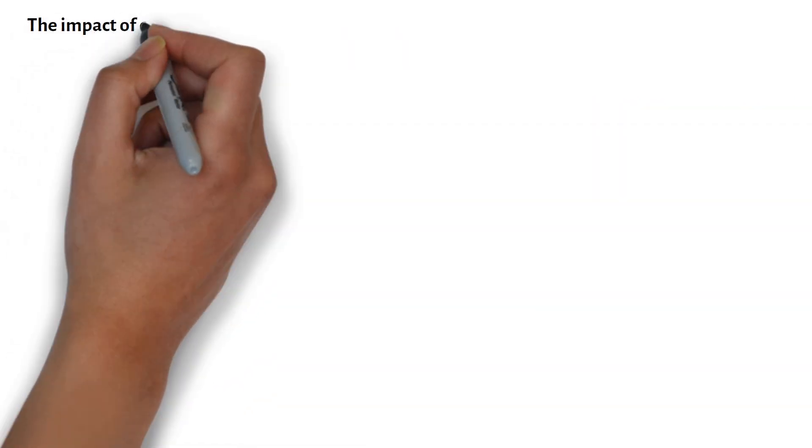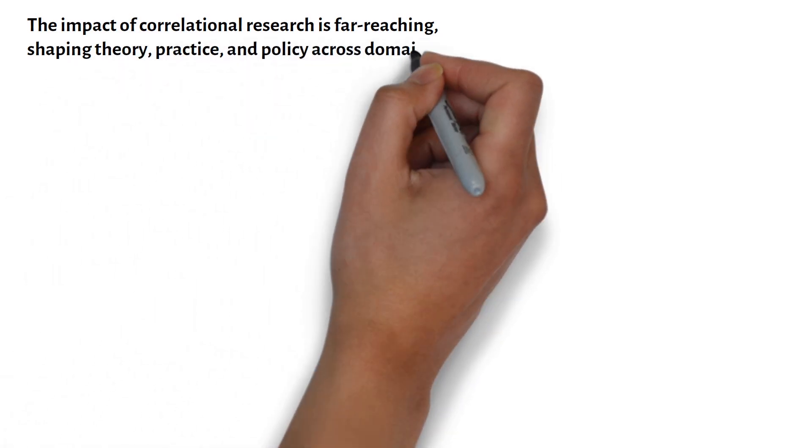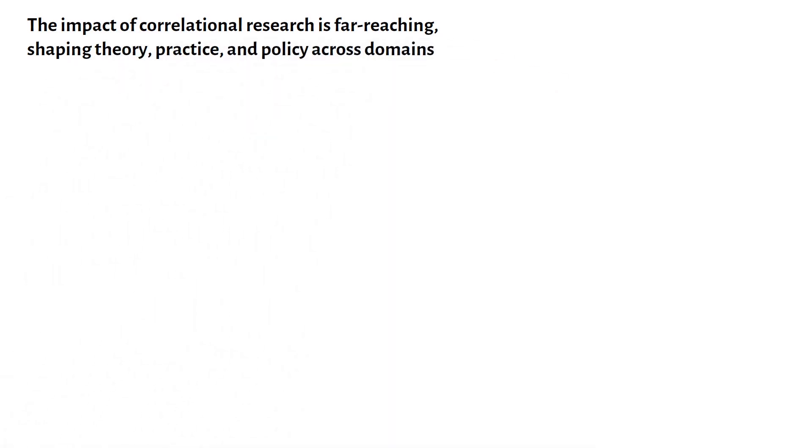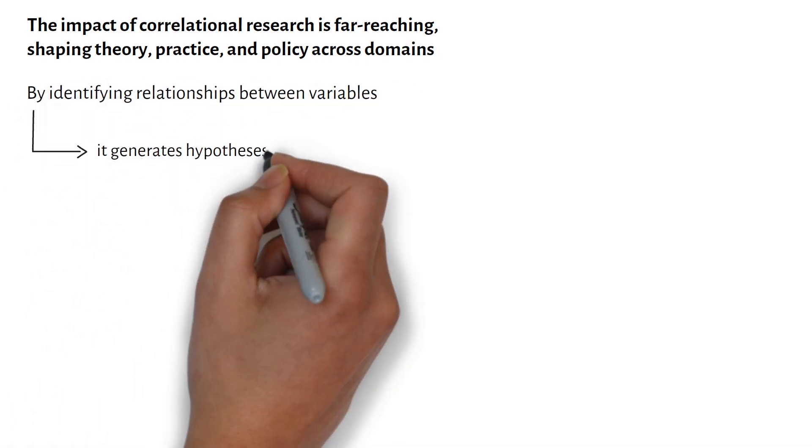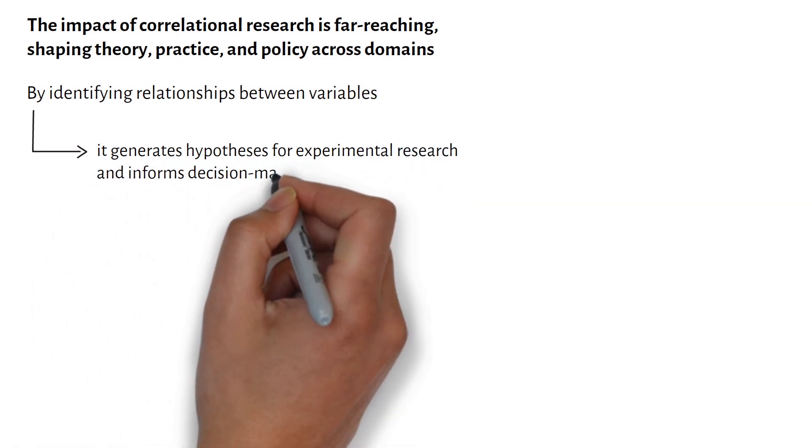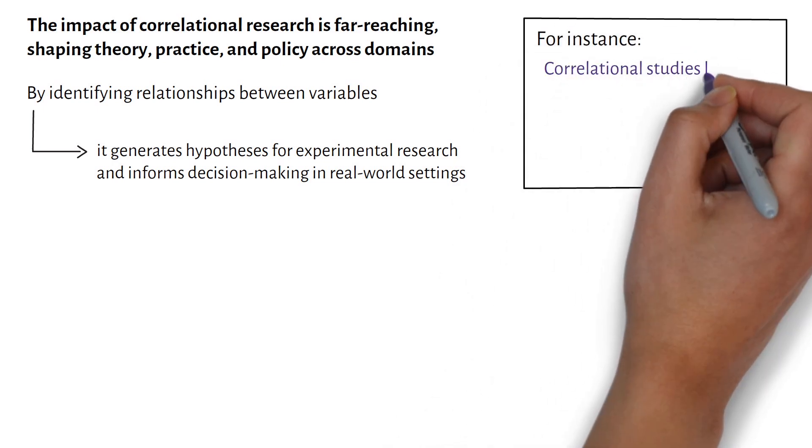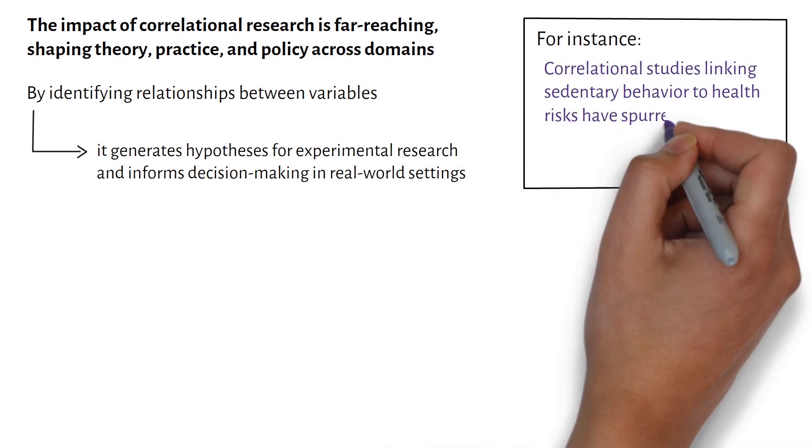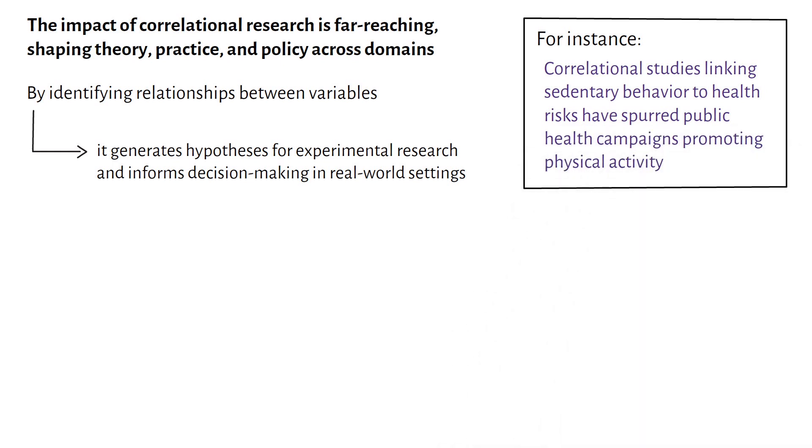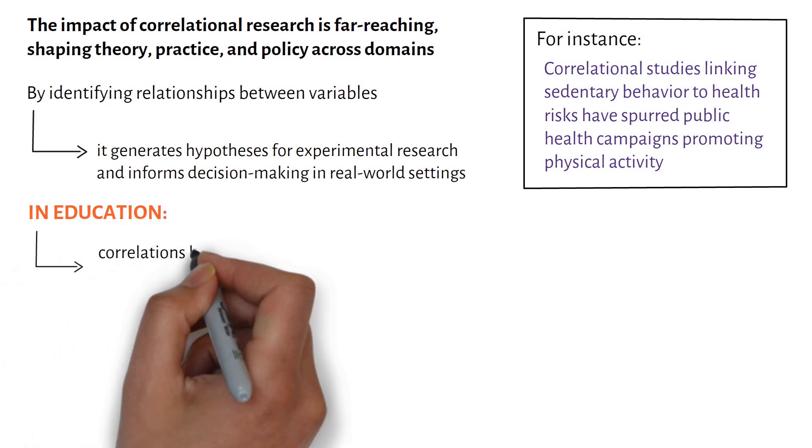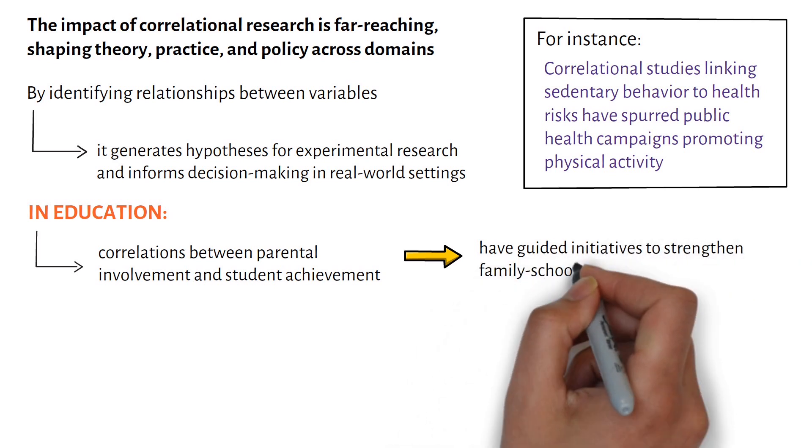The impact of correlational research is far-reaching, shaping theory, practice, and policy across domains. By identifying relationships between variables, it generates hypotheses for experimental research and informs decision-making in real-world settings. For instance, correlational studies linking sedentary behavior to health risks have spurred public health campaigns promoting physical activity. In education, correlations between parental involvement and student achievement have guided initiatives to strengthen family-school partnerships.